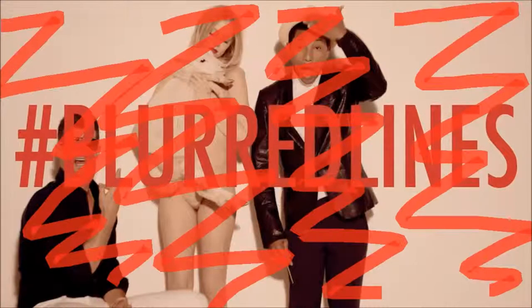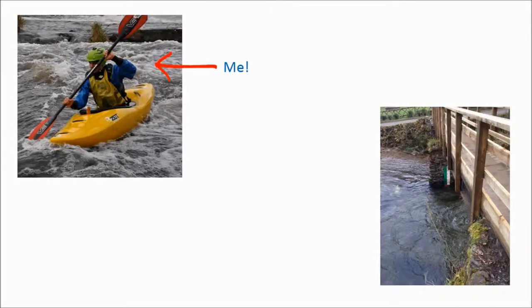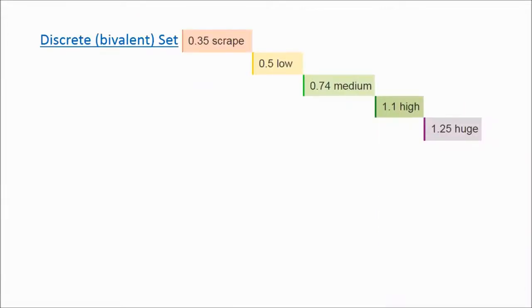Let's look at another example. As a kayaker, I'm always keeping an eye on river levels. Gauge data from a single station is assessed and categorized in discrete intervals. But a lot of data is subjective, especially in this example. This is where fuzzy logic comes in.